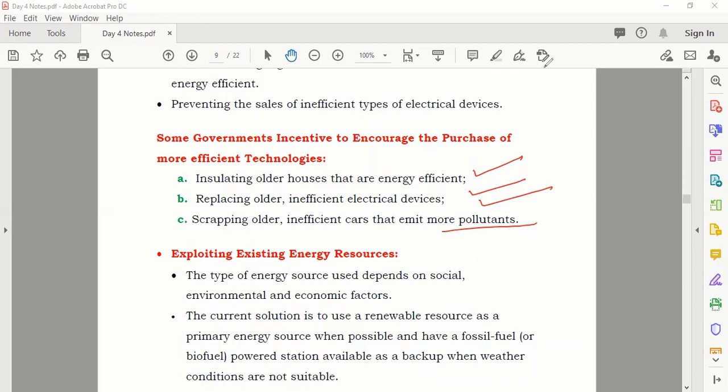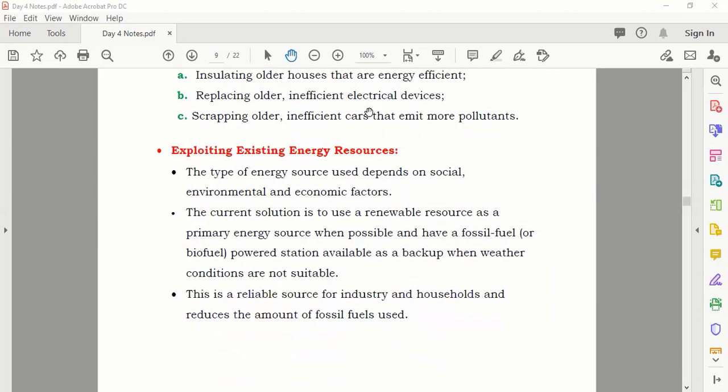After that, exploiting existing energy resources. What do you mean by exploiting? Misuse, wasting something. Exploiting means wasting. Whatever energy is available now, you should stop exploiting it. We're discussing that you should save the energy and use it if you need it. After that, more renewable resources should be used instead of fossil fuels. We have to think by ourselves how we can save energy and how we can stop its wasting.